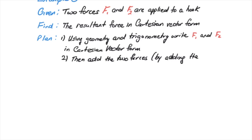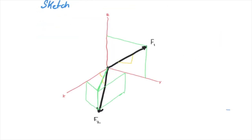The first thing we want to do is sketch the system, as we've done in the past. This is a little harder in three dimensions. I suggest you start by positioning your x, y, and z axes first, then beginning to draw your dimensions shown here in green, and finally adding the force vectors. In this case, F1 is 500 pounds and F2 is 800 pounds.